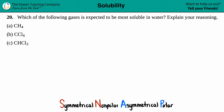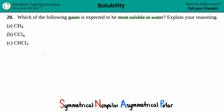Question 20: which of the following gases is expected to be the most soluble in water? We've eliminated one answer choice, so now we have a one in three chance - about 33% - of getting it correct by guessing. But we'll get it right with 100% certainty. Let's go find out which of these gases is most soluble in water.